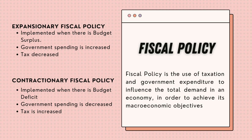Contractionary fiscal policy is implemented when there is a budget deficit, which means that government revenue is lesser than government expenditure, which means that the government is in national debt. Here, the government spending is increased and taxes are increased.